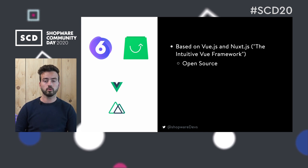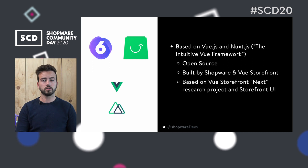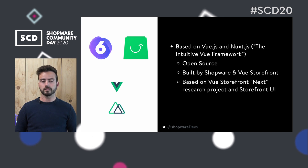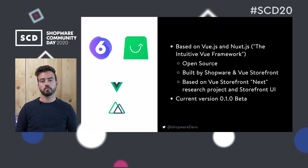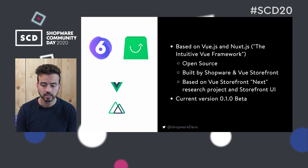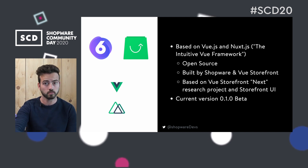Shopware PWA was developed as a cooperation between the Shopware core teams and Vue Storefront. It takes the best from both platforms and tries to bring them together. We just released beta about three weeks ago, and you're invited to go ahead and try it out. In fact, a couple of projects are already being developed on it, which we're really excited about.